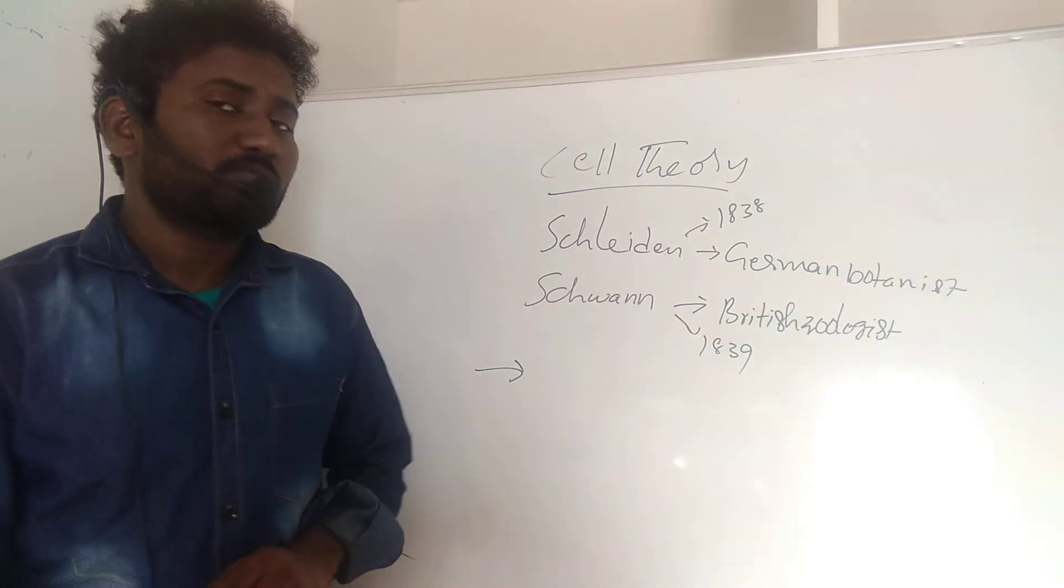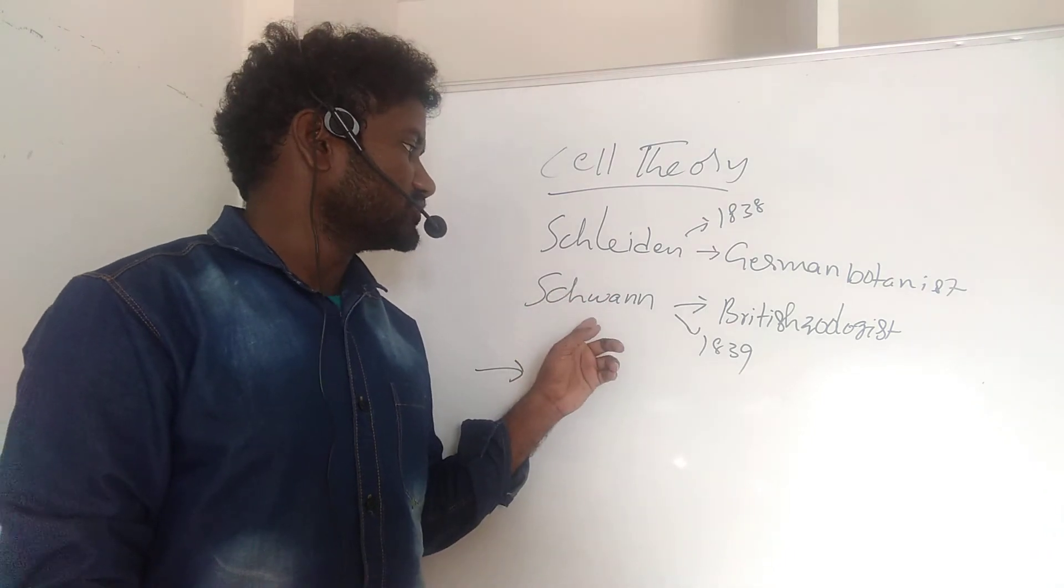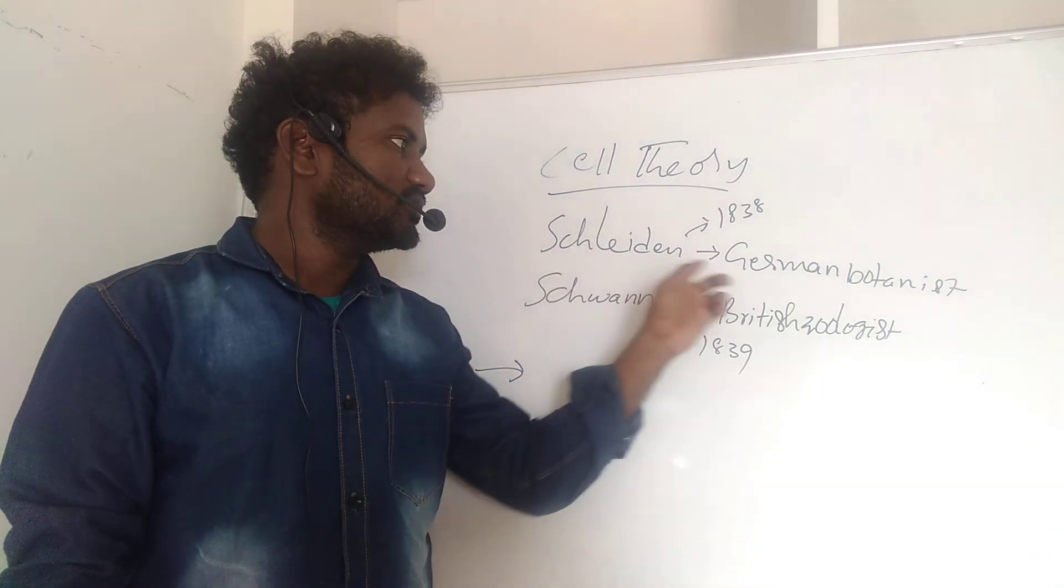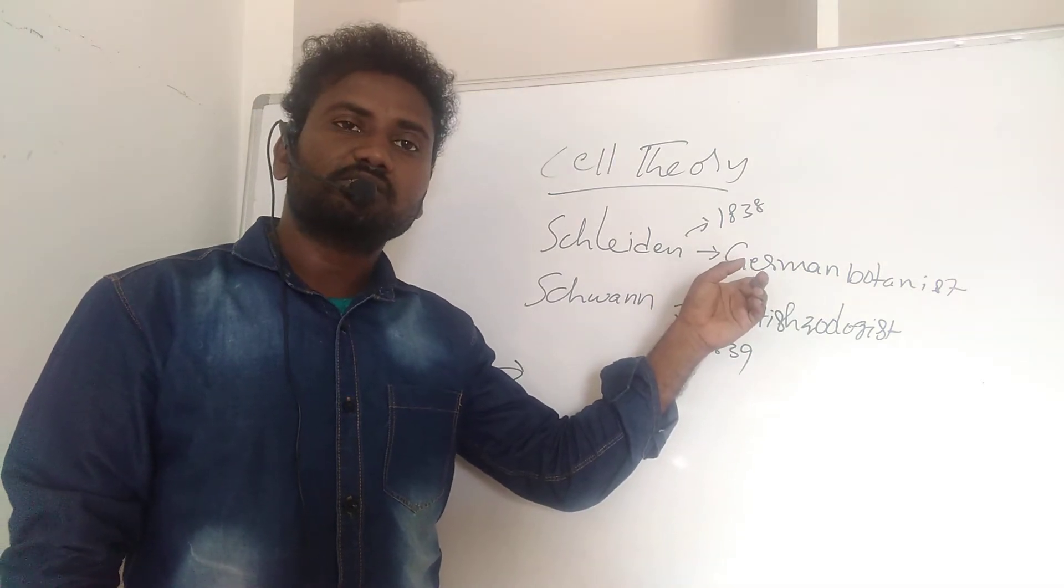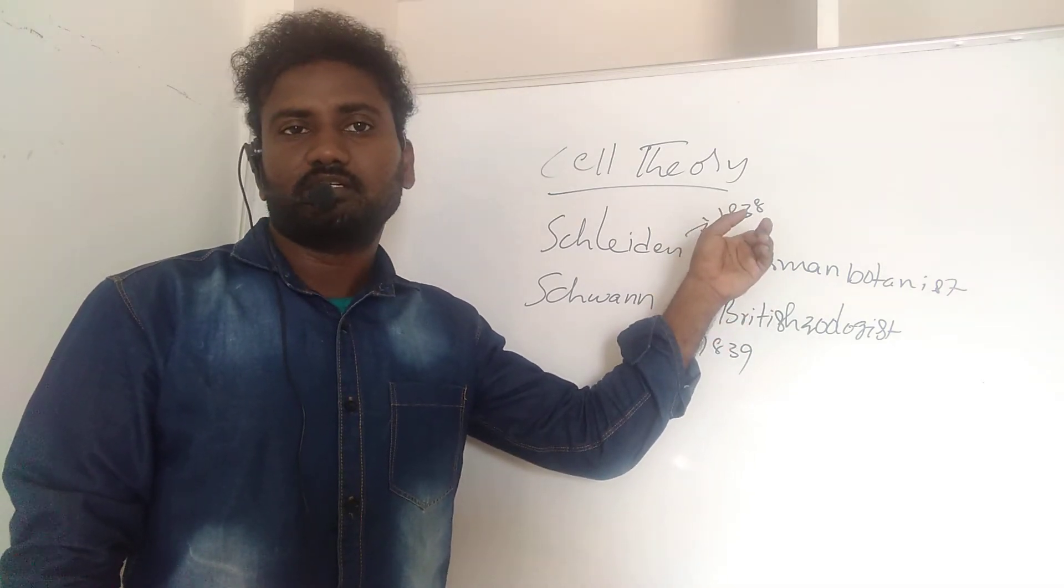Cell theory was proposed by two scientists, Schleiden and Schwann. Schleiden was a German botanist who studied different kinds of plant cells and tissues in 1838.